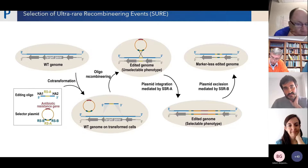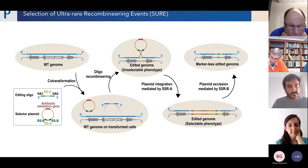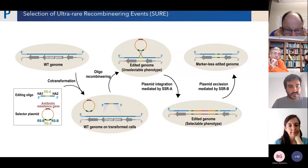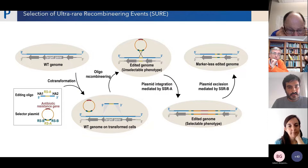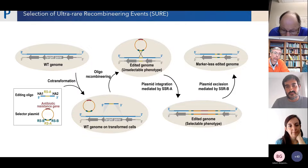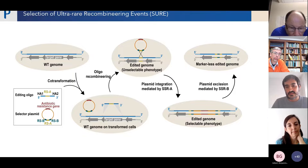This is what we did in the SURE editing protocol, which stands for Selection of Ultra-Rare Recombineering Events. Basically, we co-transform an editing oligo and a selector plasmid. The editing oligo performs the intended modification but also carries a recombination site for a site-specific recombination — for example, a loxP site recognized by the Cre protein. The selector plasmid contains an antibiotic resistance gene, this loxP site, and two additional recognition sites for a different site-specific recombinase. We co-transform these two molecules into the cell; the oligo gets incorporated into the replication fork providing an edited genome, but a phenotype not easily selectable. Then the plasmid inserts at the loxP site placed by the oligo.